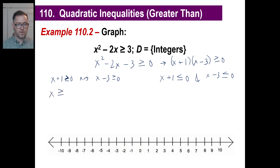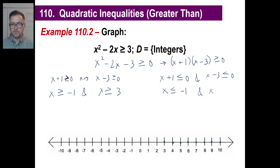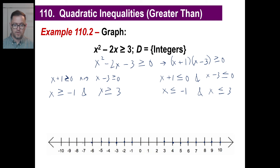Solving the first case: x is greater than or equal to negative 1 and x is greater than or equal to 3. To fit both, it has to be greater than or equal to 3 — that's the only thing that fits both. Since the domain is integers, that's how we graph this. For the second case: x is less than or equal to negative 1 and x is less than or equal to 3, so it has to be all the way to negative 1 and everything to the left. And there we go — that's how it looks.